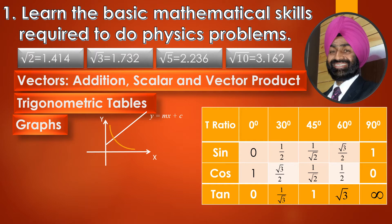The second type of graph is the inverse proportion graph, similar to Boyle's law in chemistry. If two quantities are inversely proportional, like y is inversely proportional to x, the graph would be a falling curve. The third type is a parabola — if y is proportional to the square of x. For example, in kinematics for uniformly accelerated motion, s = ut + ½at²; if displacement depends on the square of time, the graph is a parabola.